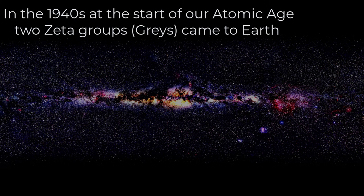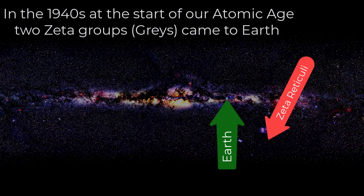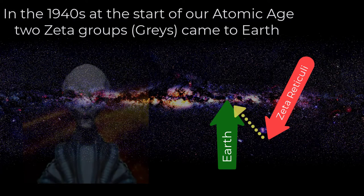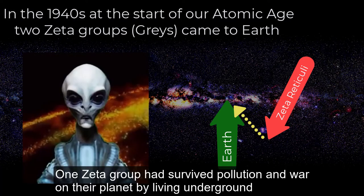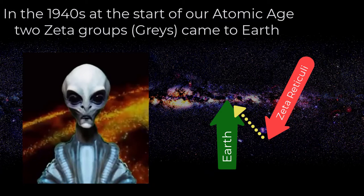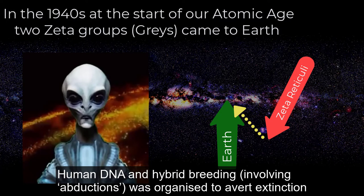In the 1940s, at the start of our atomic age, two Zeta groups — Greys — came to Earth. Zeta Reticuli is 39 light-years from Earth. One Zeta group had survived pollution and war on their planet by living underground. However, they had become sterile and could only reproduce through cloning. Human DNA and hybrid breeding involving abductions was organised to avert extinction.